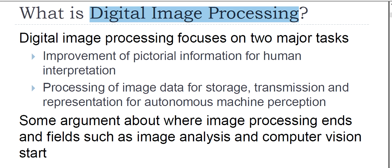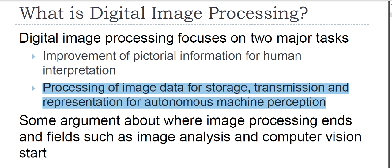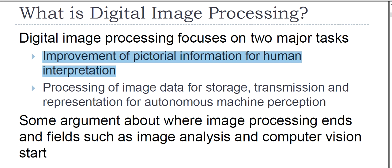Digital image processing focuses on two important tasks. The first is the improvement of pictorial information for human interpretation — this is popularly known as enhancement, where we try to improve the pictorial information present in an image for human interpretation. The second is the processing of image data for storage, transmission, representation, and autonomous machine perception.